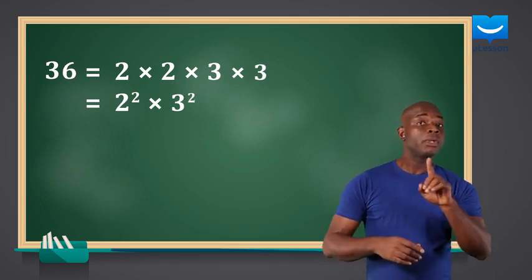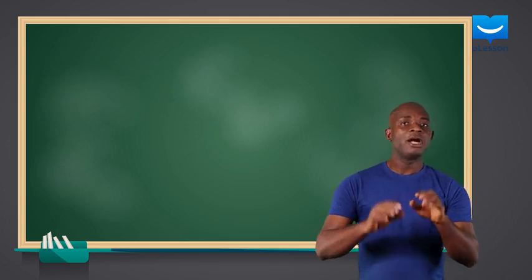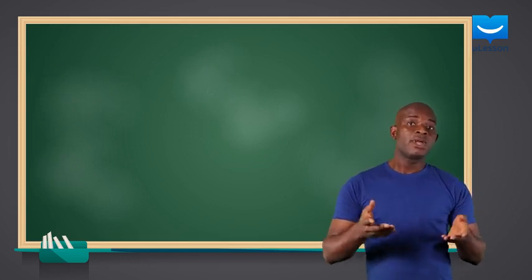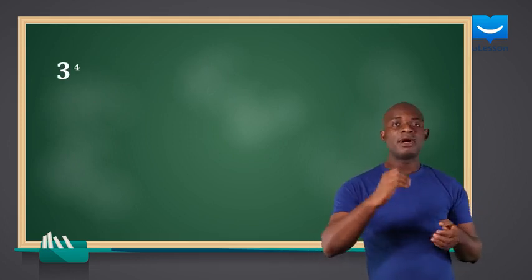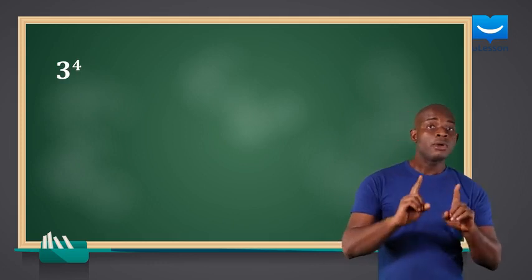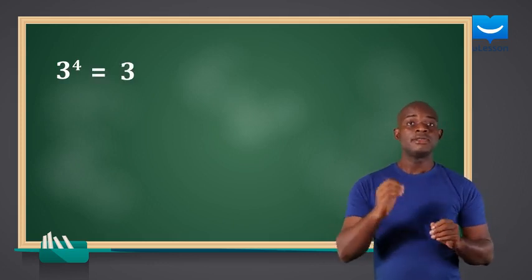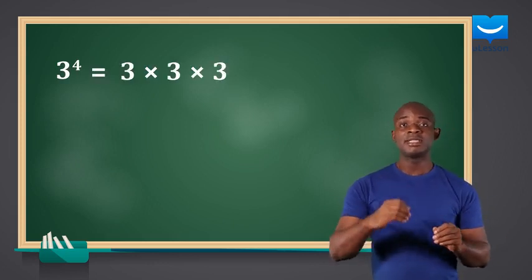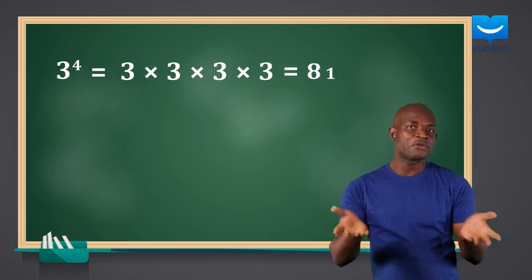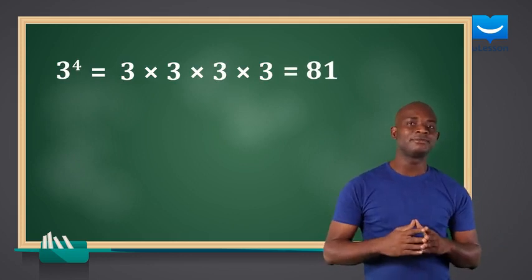We can derive a number from its index notation. Say we have 3 power 4. We know this means 3 times 3 times 3 times 3, which is equal to 81.